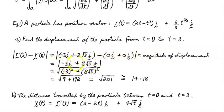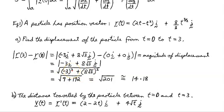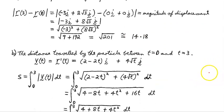Taking the difference gives us just the vector negative 3i plus 8√3 j. Taking the absolute value — the magnitude of the displacement — we get the square root of (negative 3) squared plus (8√3) squared, which is the square root of 9 plus 192, giving the square root of 201, approximately 14.18 units. That's the magnitude of the displacement vector — the straight-line distance between where the particle started and ended.